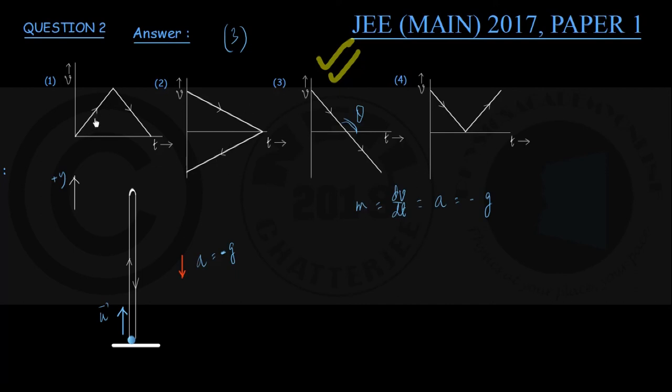In graph number 1, you can see in the first part of motion acceleration is positive, slope is positive. In the second part of motion, slope is negative, acceleration is negative. So this is not true.